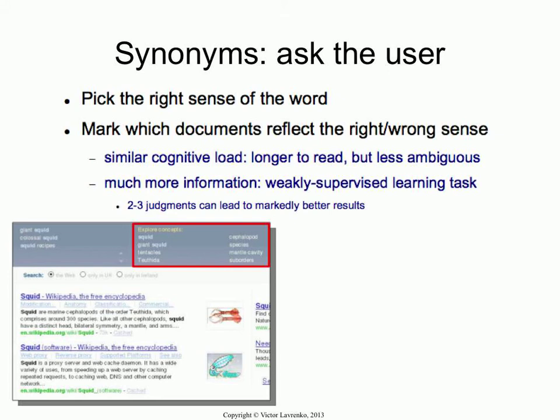This is an early version of instant search, which now suggests things as you type. But the suggestions as you type are typically prefix-based, and this is not prefix-based. So you get terms which don't start with 'Squid' — things like 'mantle cavity', which is very related but doesn't start with 'Squid'. The idea is you give a list of these terms to the user, let them select which sense they want, and this way you get more information from them.